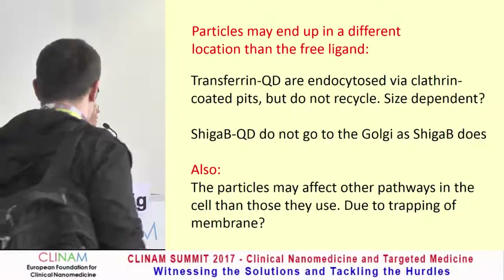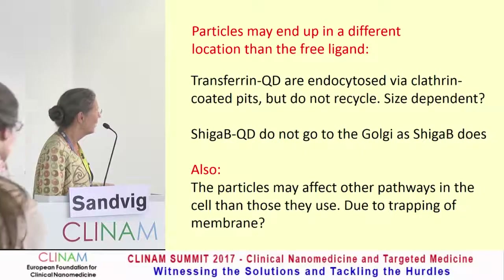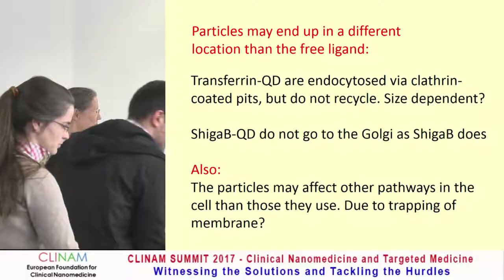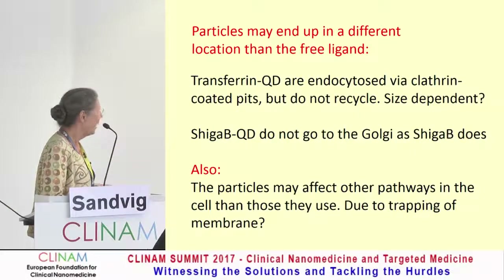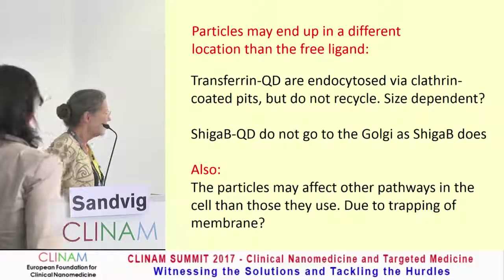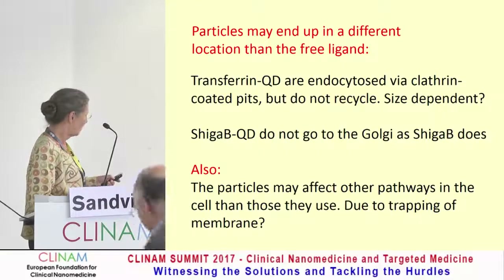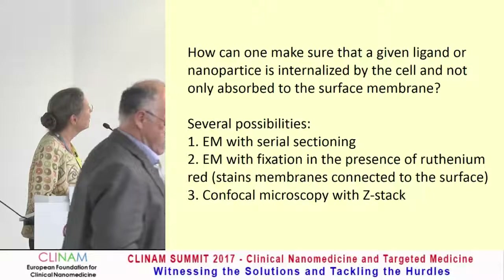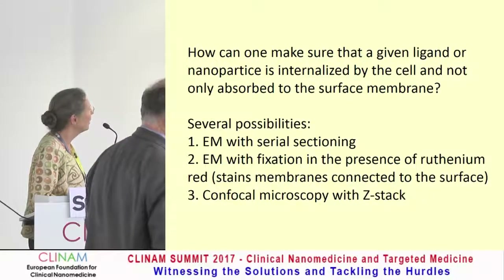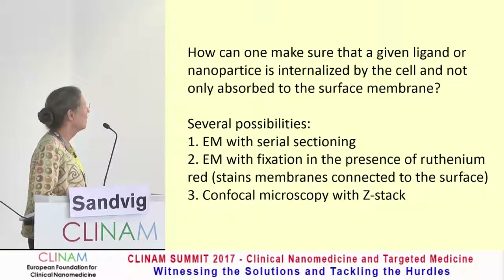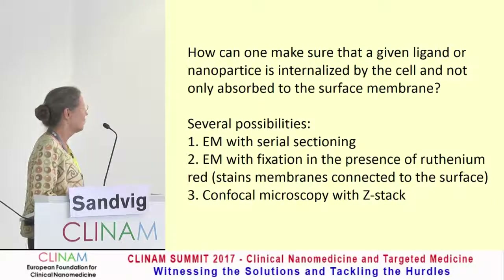We do not know why transferrin Q-dots don't recycle — whether this could be a size-dependent process. And Shiga toxin coupled to a Q-dot does not go to the Golgi as Shiga B normally does. Also, particles may affect other pathways in the cell beyond those they use, possibly due to trapping of membrane. To make sure a given ligand or nanoparticle is internalized and not only adsorbed to the cell surface, there are several possibilities: EM with serial sectioning, EM with fixation in the presence of ruthenium red, or confocal microscopy with Z-stacks.